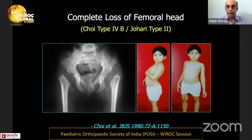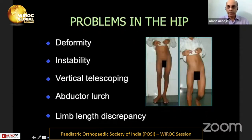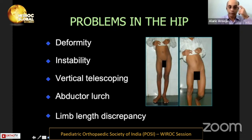The child presents with a hyperlordotic gait very similar to a bilateral hip dislocation, with a severe lurch and shortening. This is the most difficult type to treat because it has all the problems of a septic hip sequel — not only deformity, but very severe instability due to the absence of the femoral head, vertical telescoping with each step, a disabling abductor lurch, and limb length discrepancy from loss of growth potential of the proximal femur.